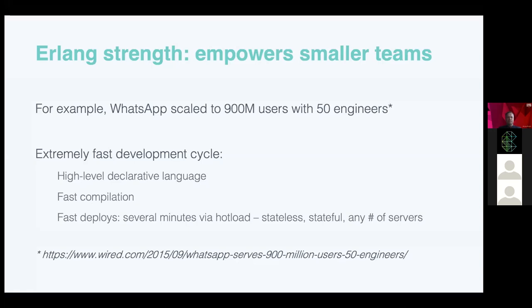This is one of the differences we see between the WhatsApp scaling model and the Facebook scaling model. Facebook is predominantly written in C++ on the infrastructure side, and they took a completely different path.